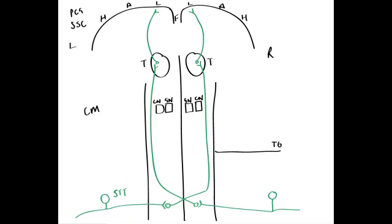If we turn to the dorsal column pathway — I'll do this in red — it's important to remember this T6 region of the spinal cord. Drawing a sensory neuron coming in with its cell body in the dorsal root ganglion: if it's coming from below T6, it will enter the spinal cord and travel quite medially to join what's known as the gracile fascicle. This primary neuron doesn't cross the midline at the level of the spinal cord. Because it's come from below T6, it ascends in the gracile fascicle until it gets to the gracile nucleus, where it forms a synapse with the secondary neuron.